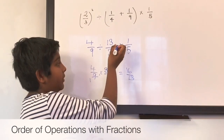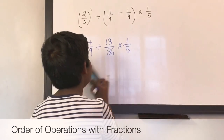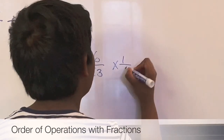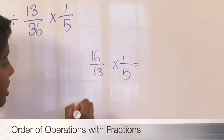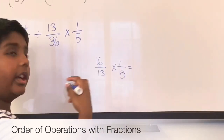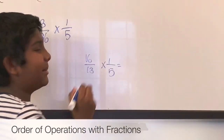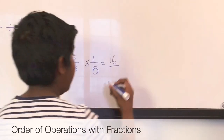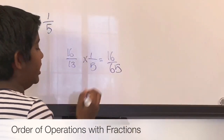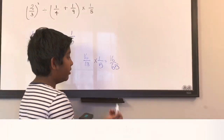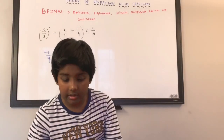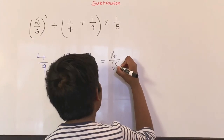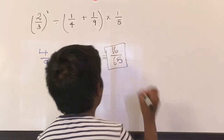We still have times 1 over 5, so now it's 16 over 13 times 1 over 5. Can we reduce anything? No, we can't. So let's just multiply: 16 times 1 equals 16, and 13 times 5 equals 65. Can we reduce 16 over 65? No, we can't. So the answer is 16 over 65.